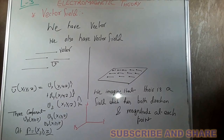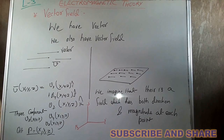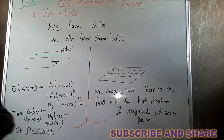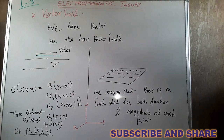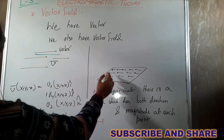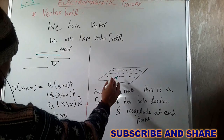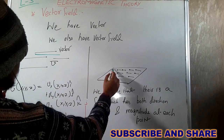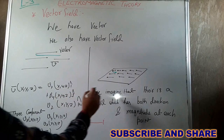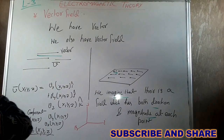A vector is a quantity which has both magnitude and direction, and we represent that vector by an arrow. A vector field is made up of many vectors at each point. This is an example of a representation of the vector field, where each point has a field which has both direction and magnitude.